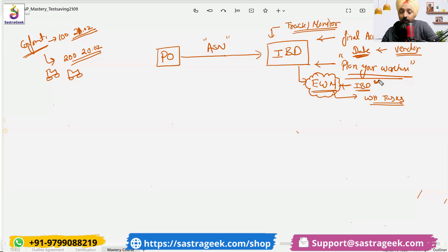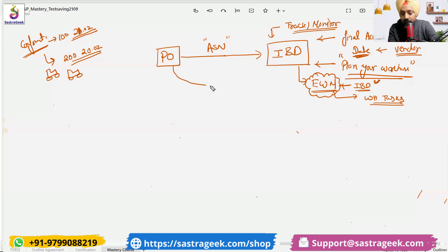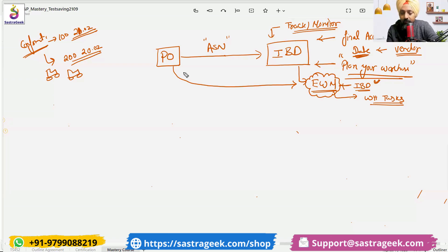The information passed to the EWM system is generally passed through the IBD — we don't pass it from the purchase order. Why don't we prefer to pass it from the purchase order? Because there is so much uncertainty. In the purchase order, whatever dates and quantities we have, there is uncertainty.